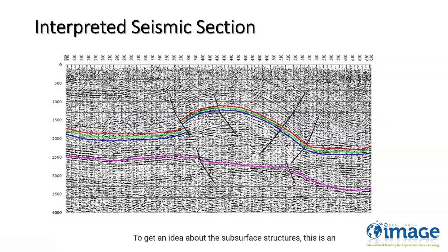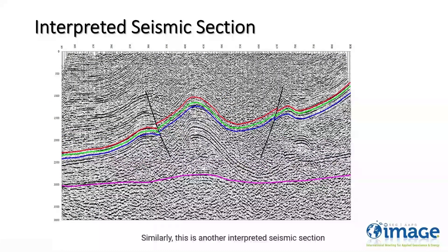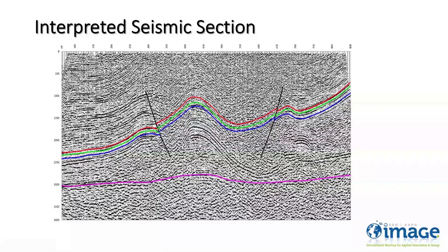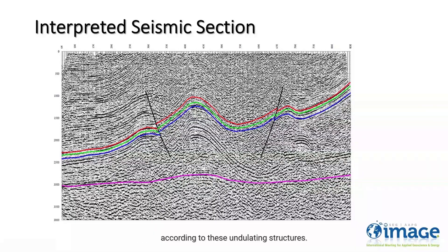To get an idea about the subsurface structures, this is an interpreted seismic section. As we can see, this is a compressional regime and pop-up structures are commonly observed. Similarly, this is another interpreted seismic section and we can see highly undulating structures. It is important to note that in order to build a geologically realistic velocity model, the velocity needs to be constrained according to these undulating structures.